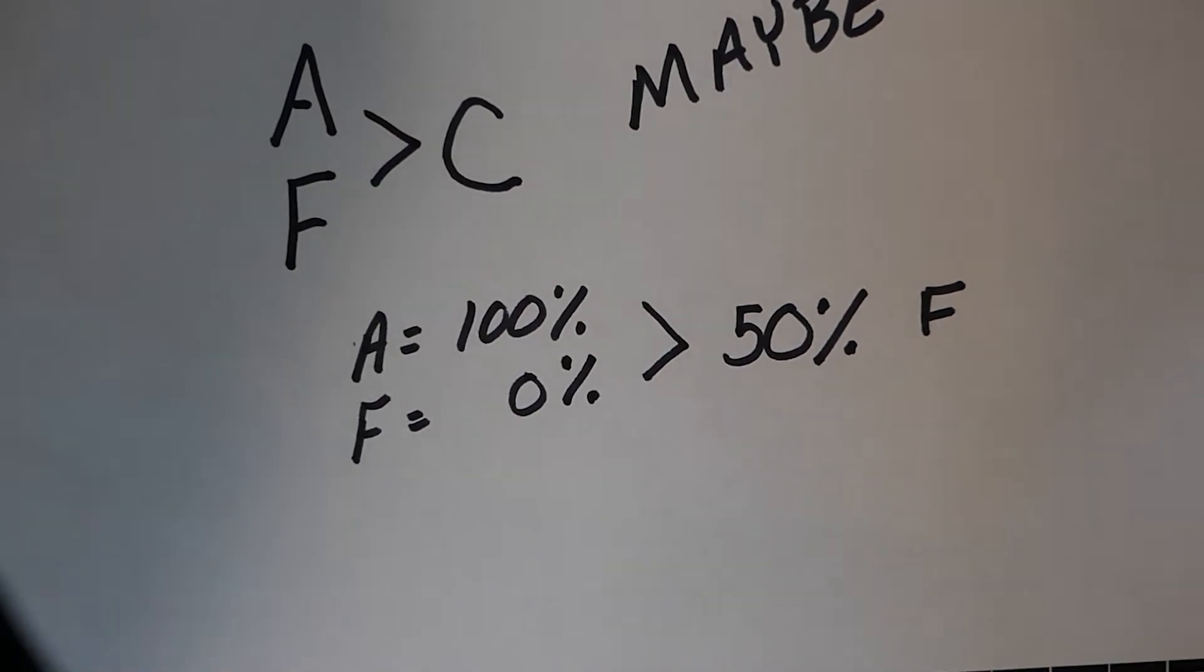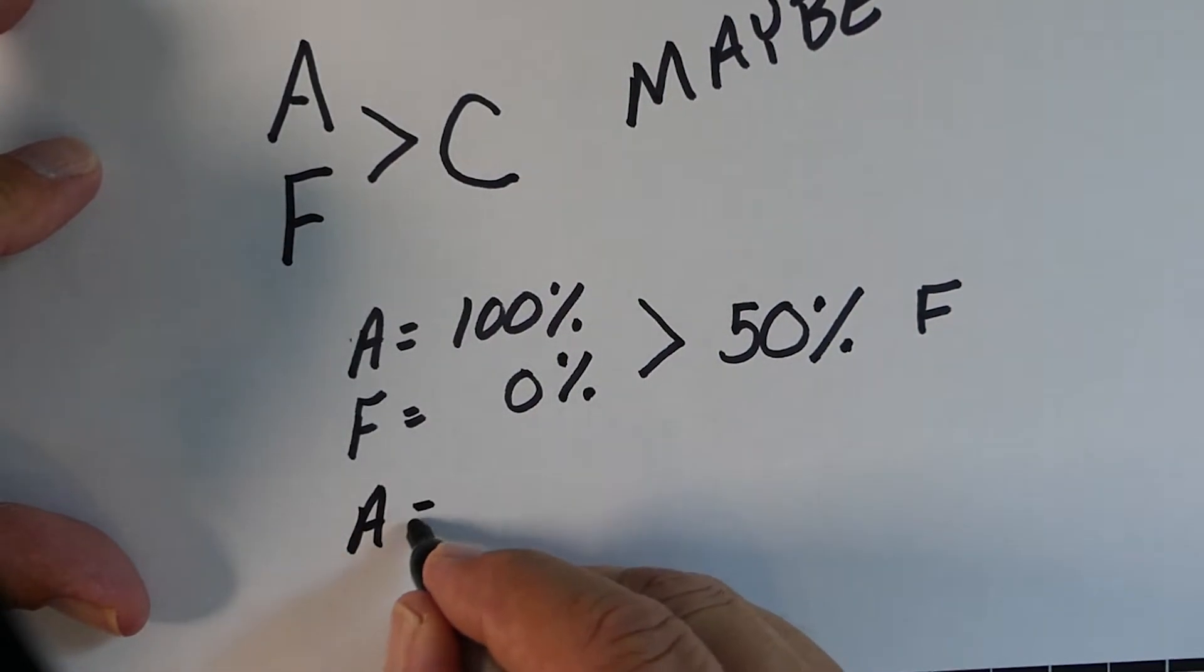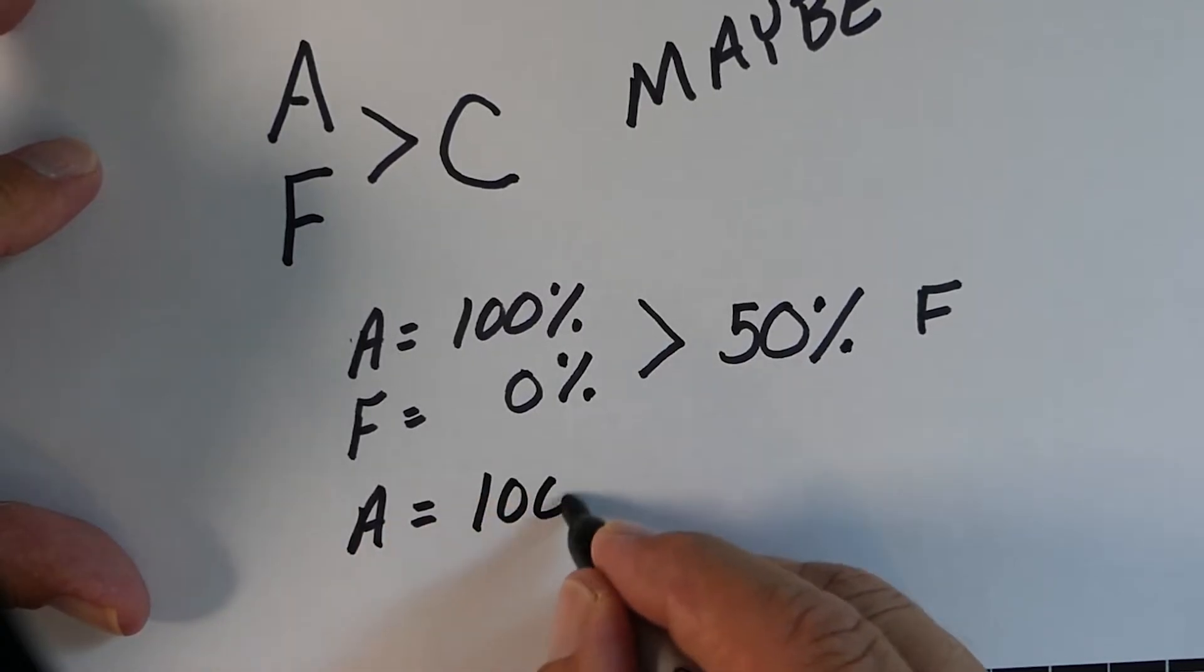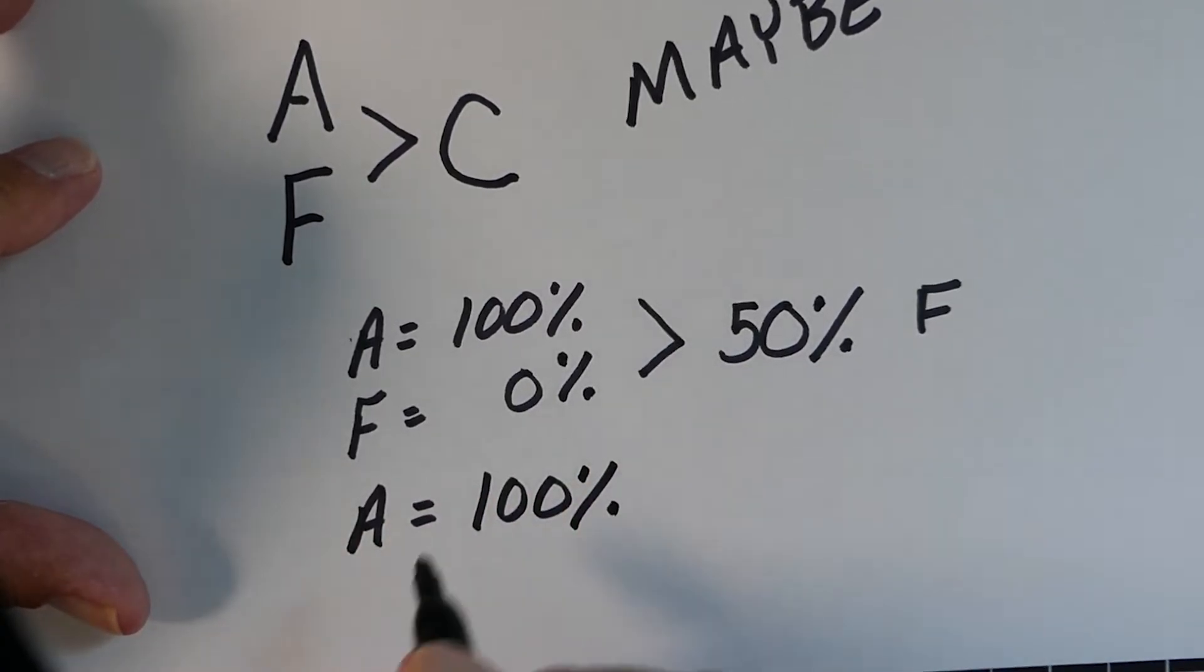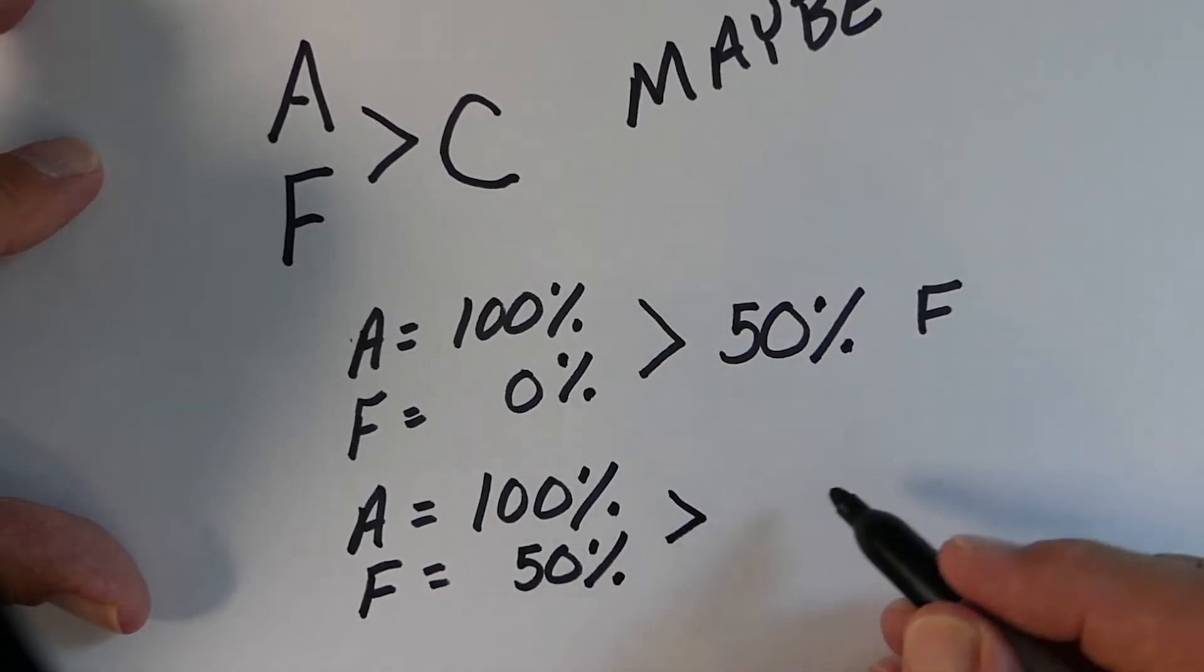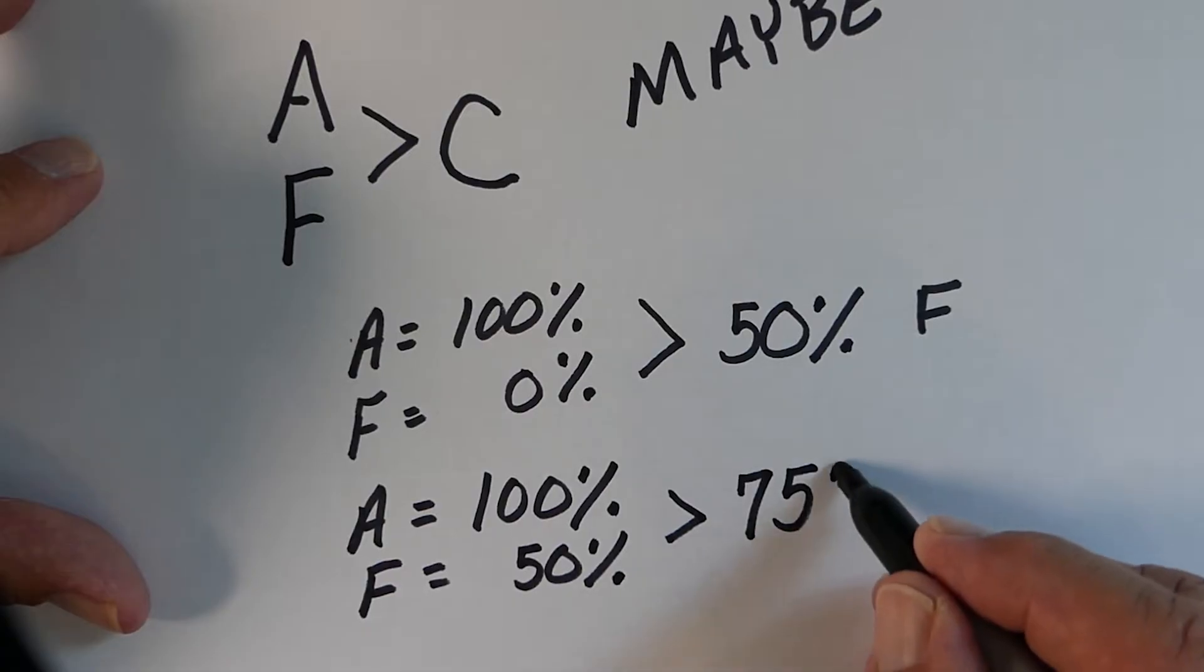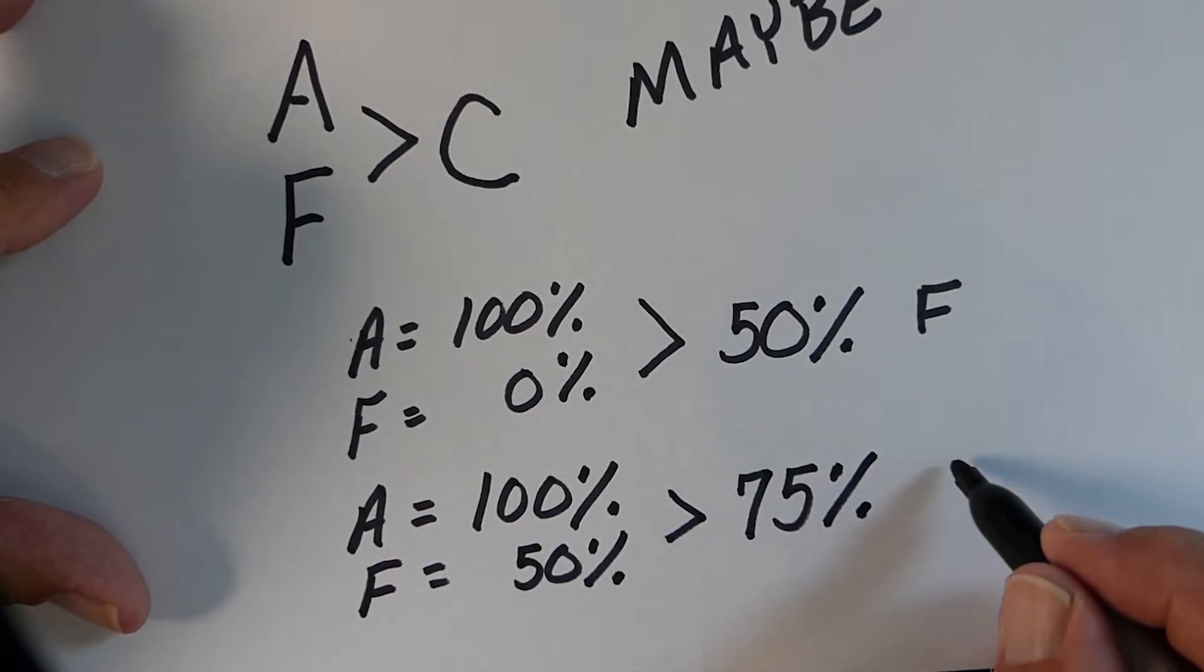On the flip side, let's say we got 100% again for our A. And let's say our F this time was a little bit better—let's say we got 50%. It's still an F, but it's a little bit higher than zero. When we average those two scores together, we end up with 75%. In that case, we would end up with a C.